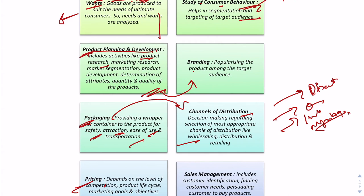Next is pricing, which is very important. The price must be within the affordability range of the consumer and sufficient to satisfy the company's objectives. Pricing depends on various factors like the level of competition in the market, the product life cycle, and marketing goals and objectives. Pricing is the major factor that affects the consumer's buying capability.